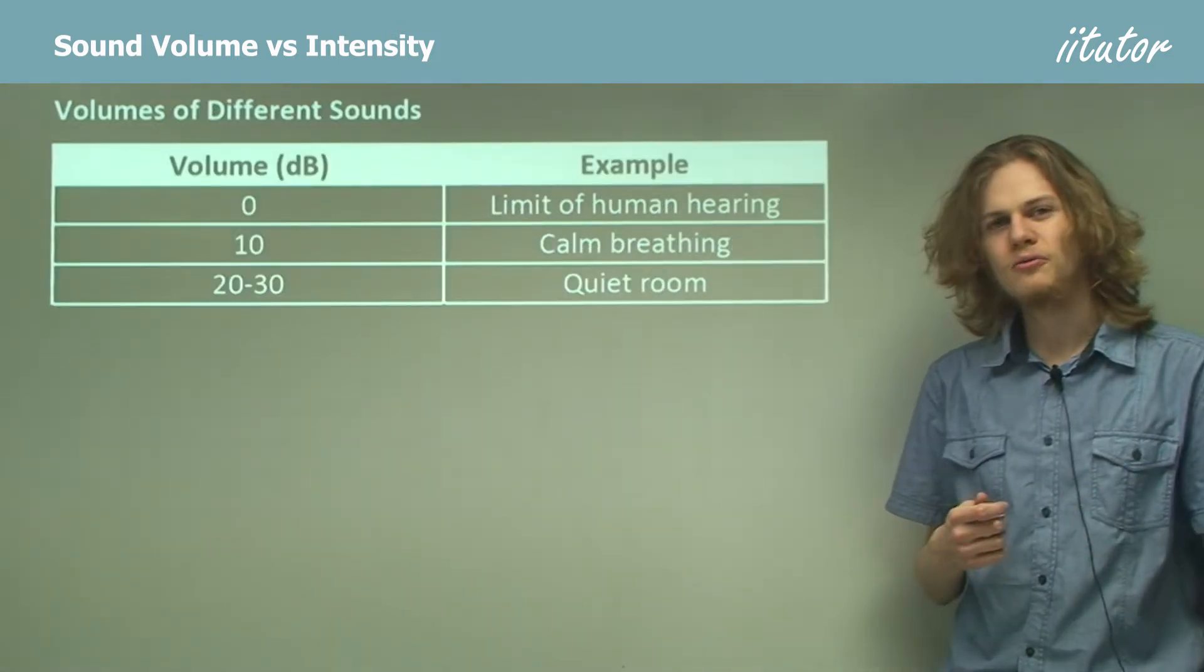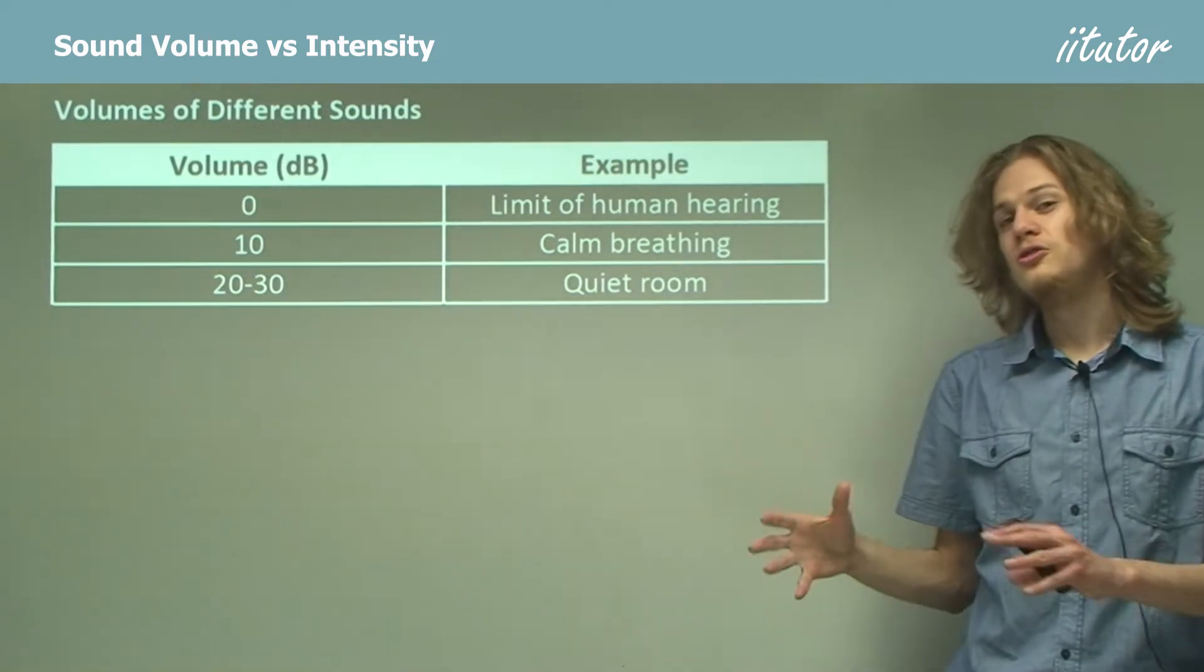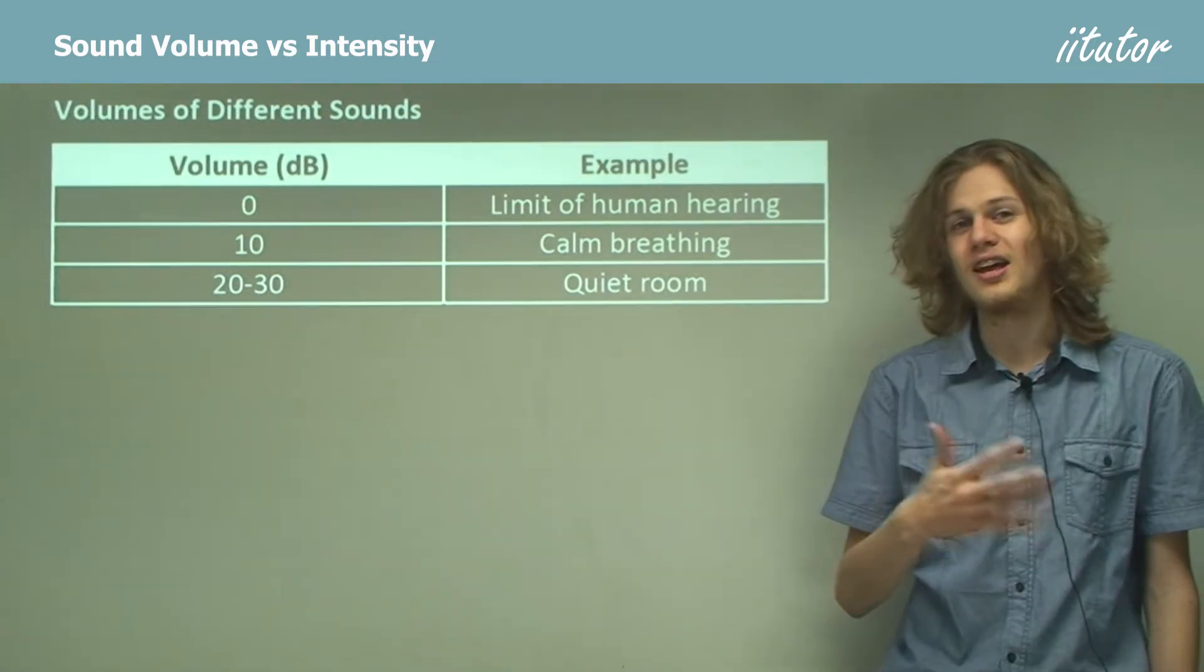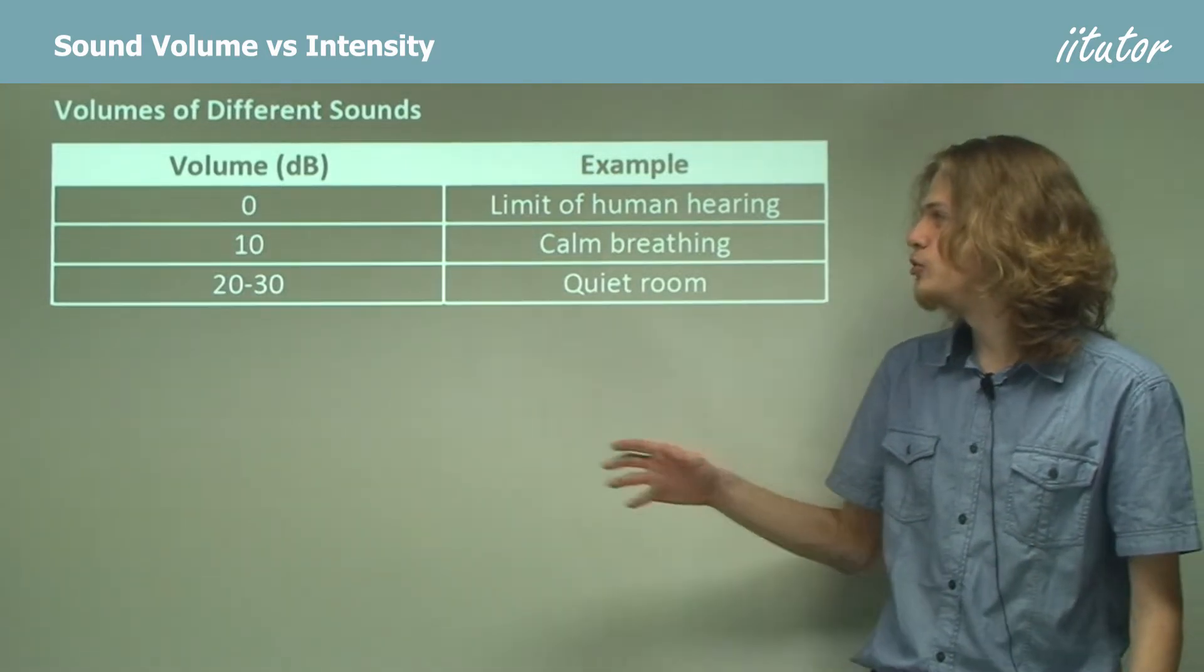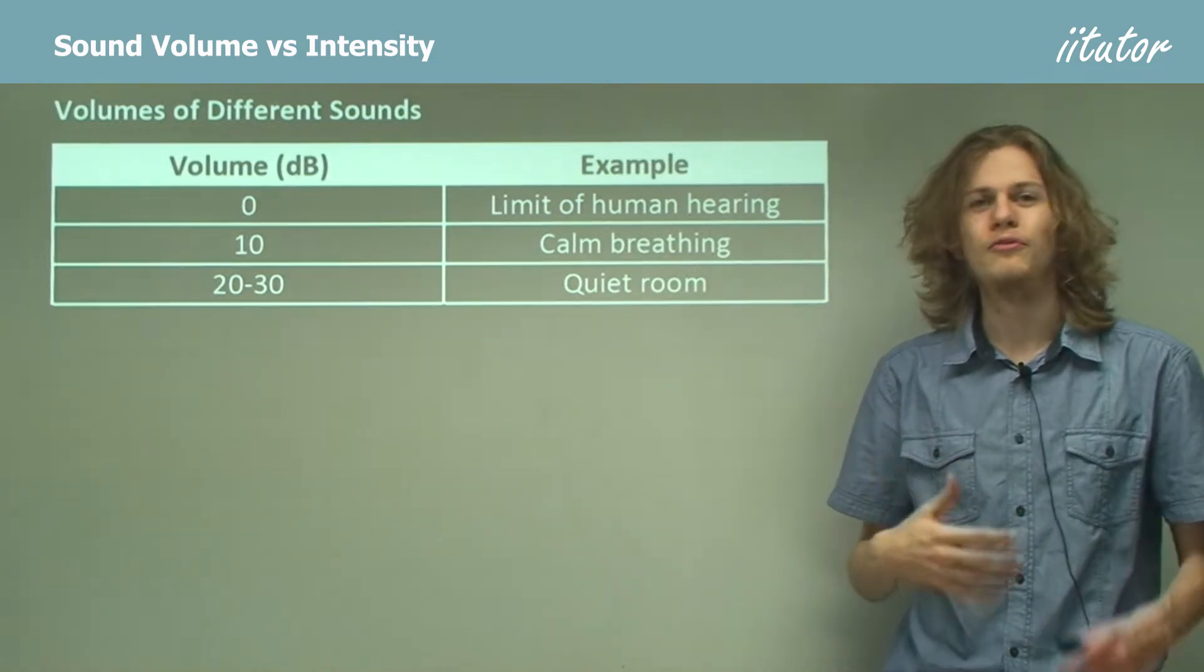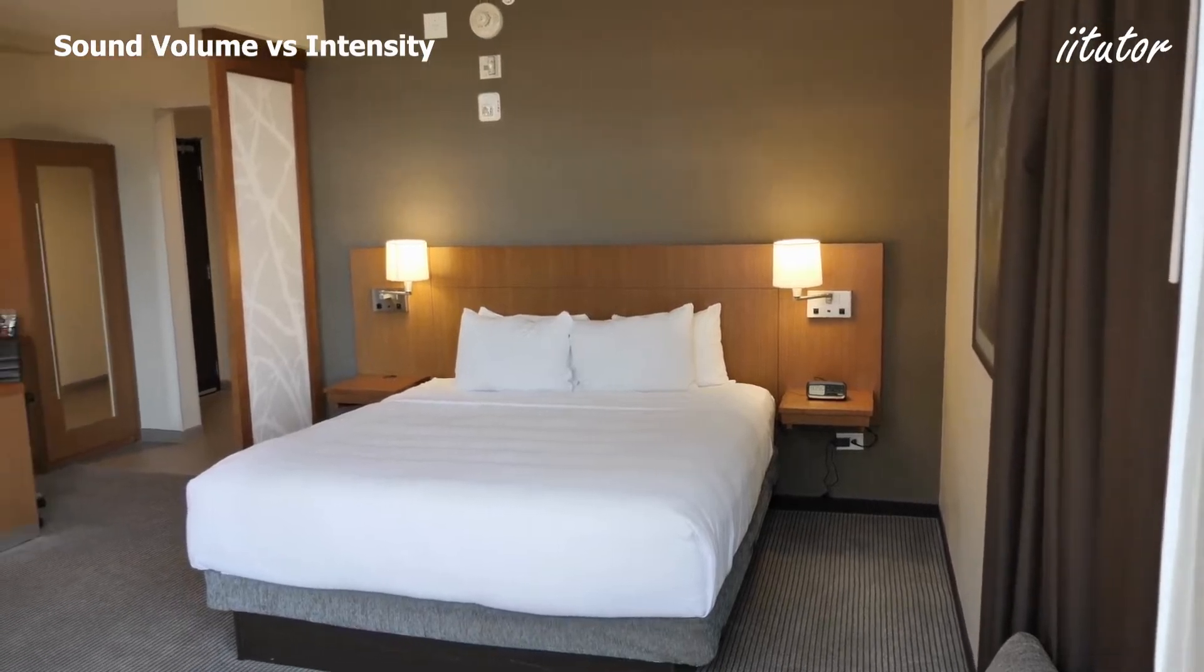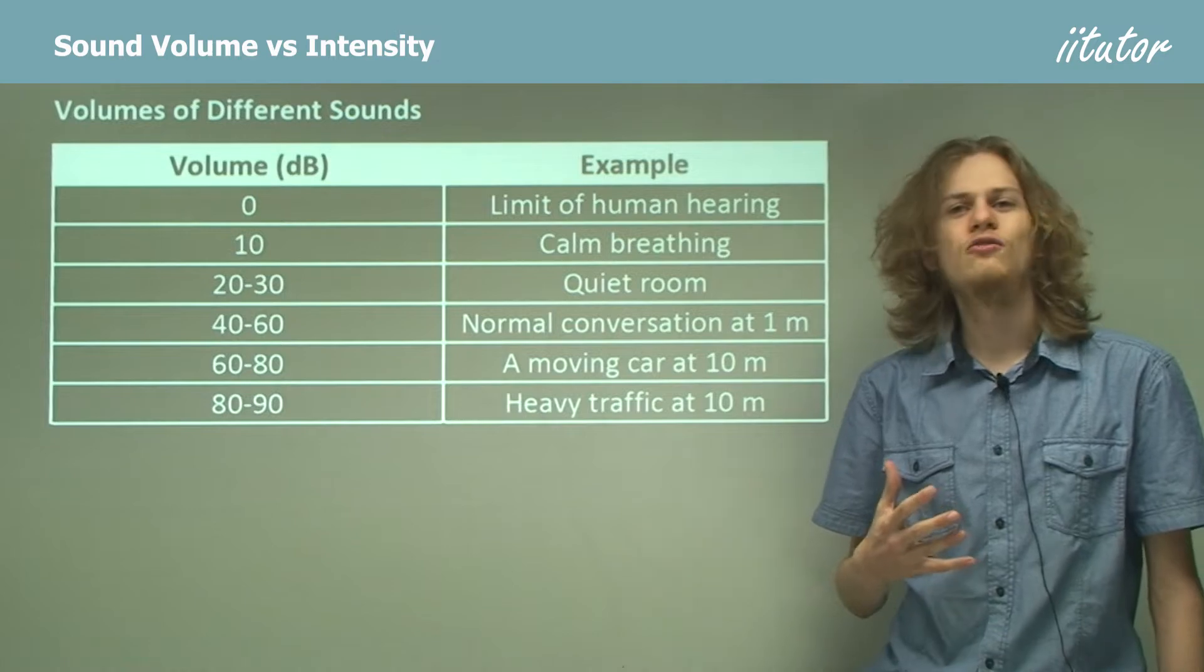So we have a set here of some different sounds and how loud they are. Something that has a volume of 0 decibels does not in fact have zero intensity. It has 10 times less intensity than a sound that has 10 decibels. But the human ear is incapable of hearing sounds that have a volume of less than 0 decibels. So this is the limit of human hearing. 10 decibels is about the same volume as calm breathing, so it's very soft. 20 or 30 might be the sound of a quiet room.